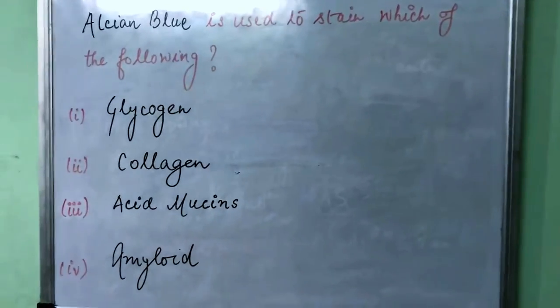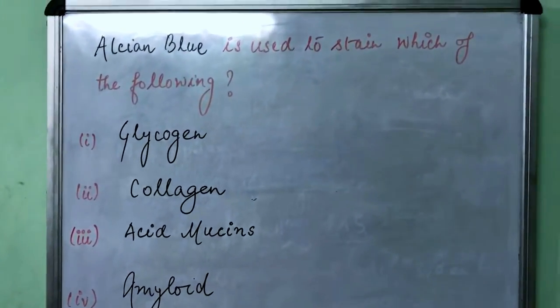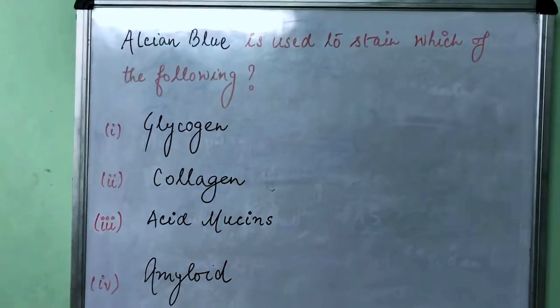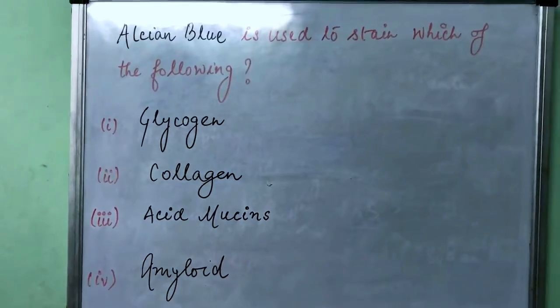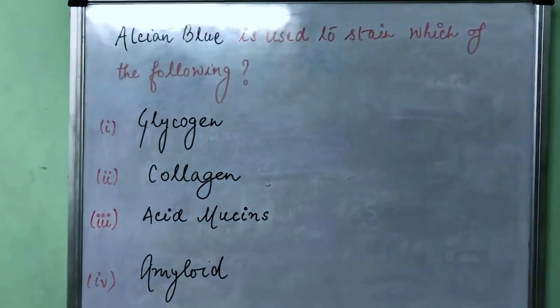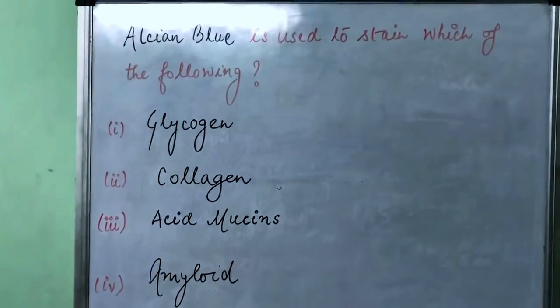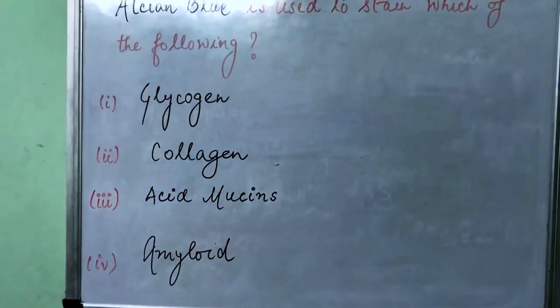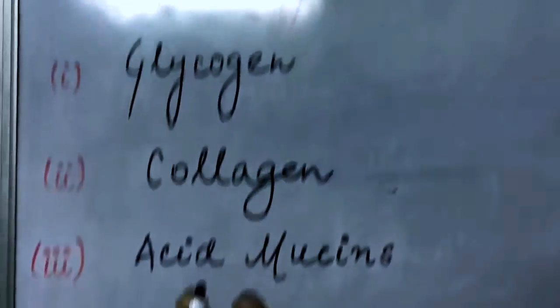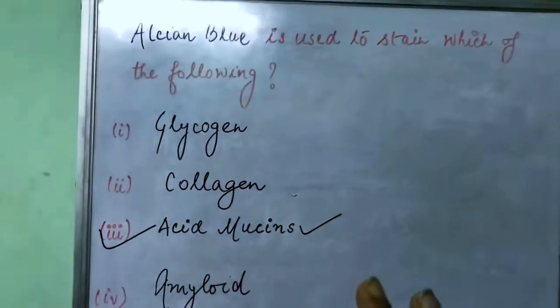Now, as far as stains are considered, there is no logic to it. Some stains are used to stain certain substances and we just have to remember the names. It's an extremely important topic as far as PG entrance examinations are considered because these stains are commonly used by pathologists and they love to ask questions on what they do on a daily basis. So the answer to this question is extremely simple: the answer is acid mucins, option 3.